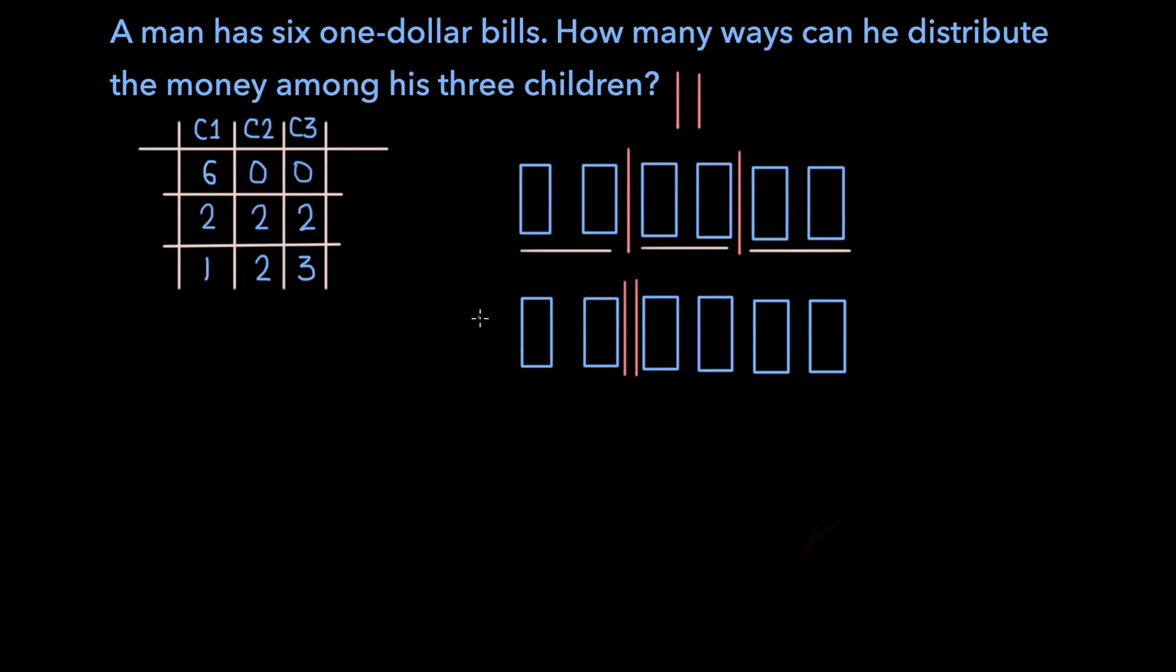Another possible scenario is the following, where the first child once again gets everything to the left of the first divider, the second child gets the money between the two dividers, which in this case is nothing, and the third child gets the money to the right of the second divider, so $4.